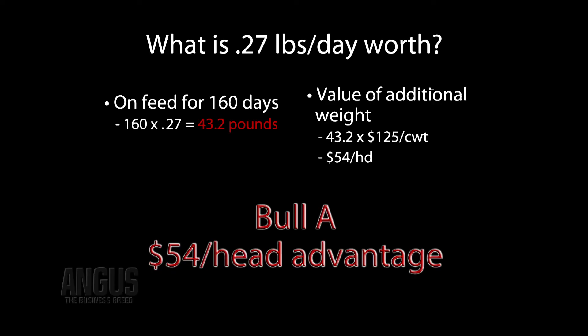So what does that mean in terms of dollars and cents? If we take that 0.27 average daily gain and multiply it by a 160-day feeding period, that means that Bull A's calves should gain on average 43.2 pounds more than Bull B's. In dollars and cents, if fat cattle were going for $1.25, that would mean there's a $54 per head difference for Bull A's progeny compared to Bull B's.